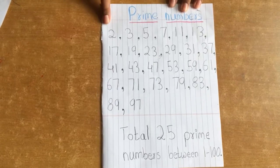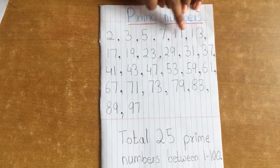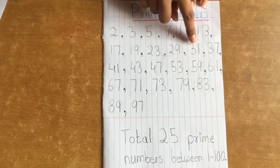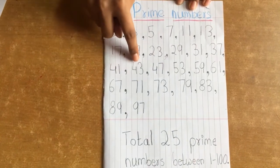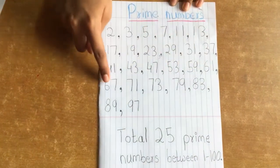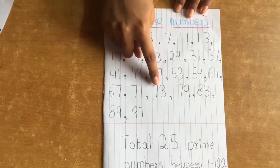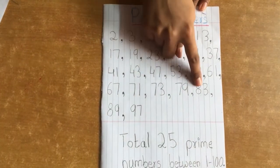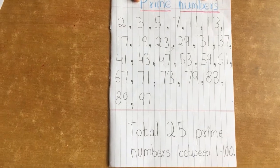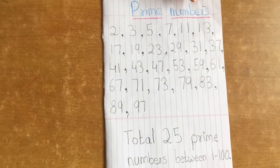There are 2, 3, 5, 7, 11, 13, 17, 19, 23, 29, 31, 37, 41, 43, 47, 53, 59, 61, 67, 71, 73, 79, 83, 89 and 97. These all are prime numbers between 1 to 100.